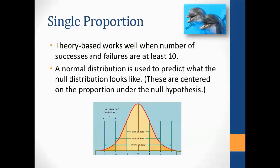With a single proportion, we also moved into theory-based tests. Theory-based tests for proportions work fairly well if there's at least 10 successes and 10 failures — and we did not have that with the Buzz and Doris situation. We used a normal distribution to predict what the null distribution would look like. We saw that our null distributions in Chapter 1 are symmetric, centered on the value under the null hypothesis. We just need to find the variability, and the normal distribution predicts that as well.